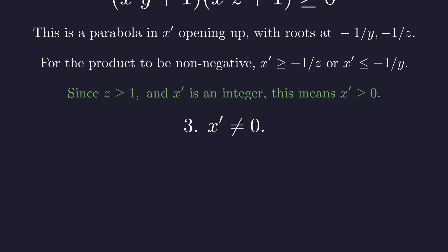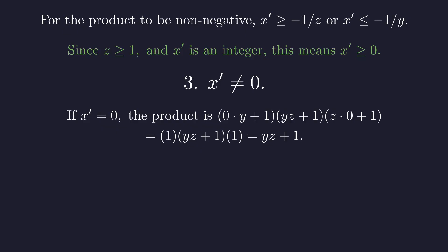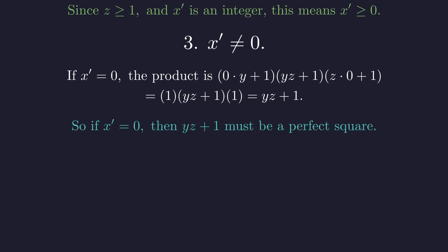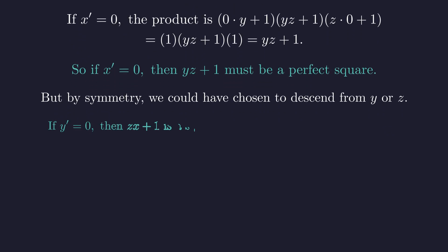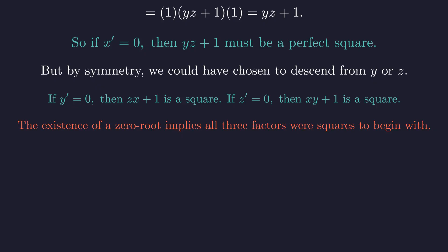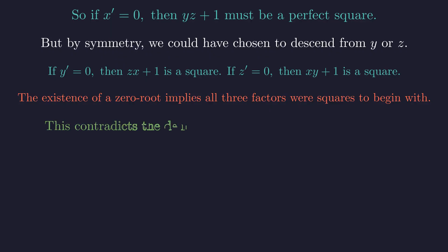But wait, we also need to rule out x prime being exactly 0. Let's see what happens if we assume x prime is 0. If x prime is 0, then the first and third factors both become 1, so our product simplifies to just y times z plus 1. For this to be a perfect square, y times z plus 1 would have to be a perfect square. But here's the thing. There was nothing special about choosing x as our variable. We could just as well have done this whole construction with y or z. If we did the same construction with y and got y prime equals 0, that would force z times x plus 1 to be a square. Similarly for z. Since we assumed we had a minimal counterexample, at least one of these constructions must give us 0. But that would mean all three factors are perfect squares from the start. But that contradicts our assumption that we had a counterexample in the first place, so x prime must be a positive integer.